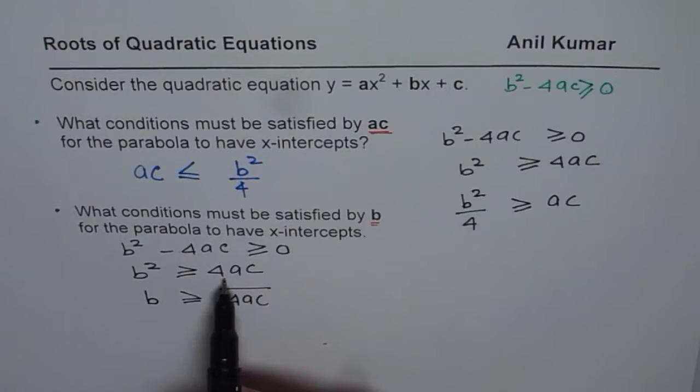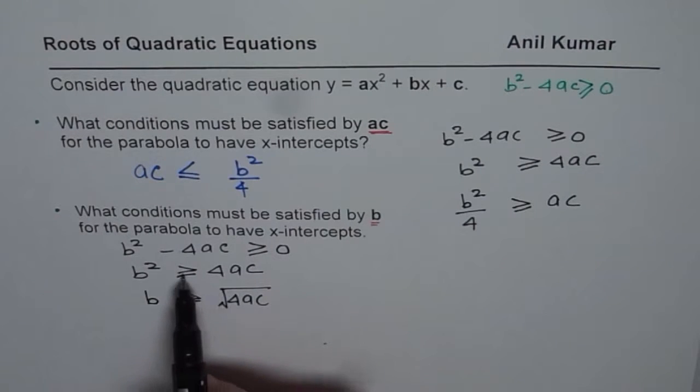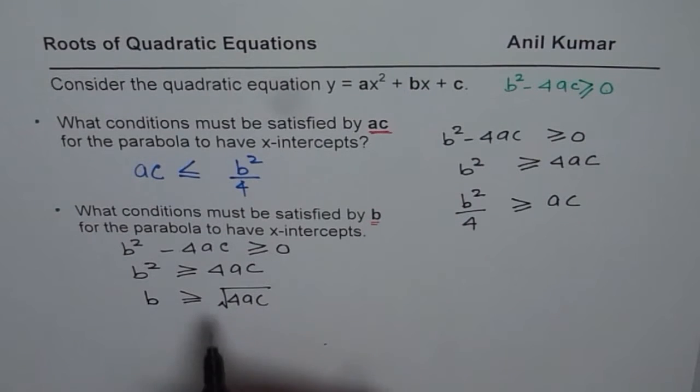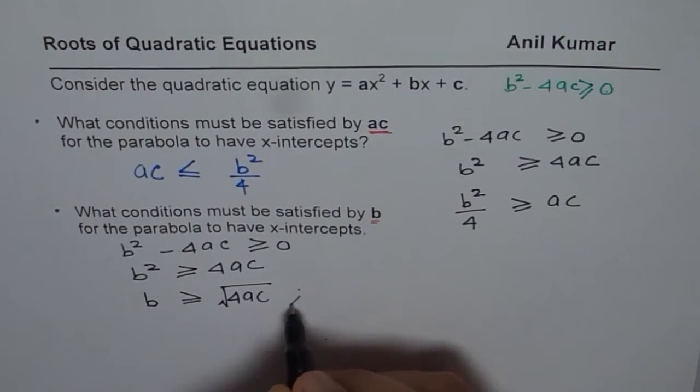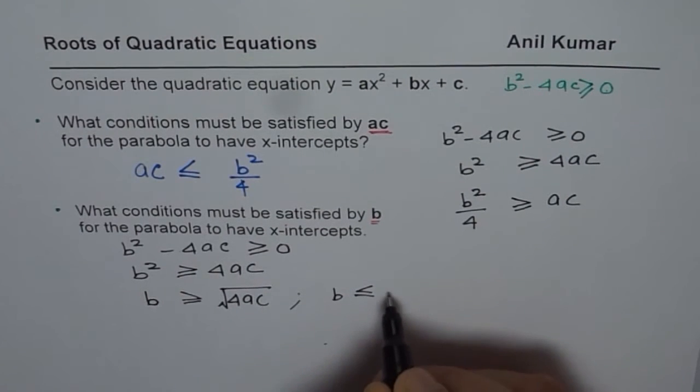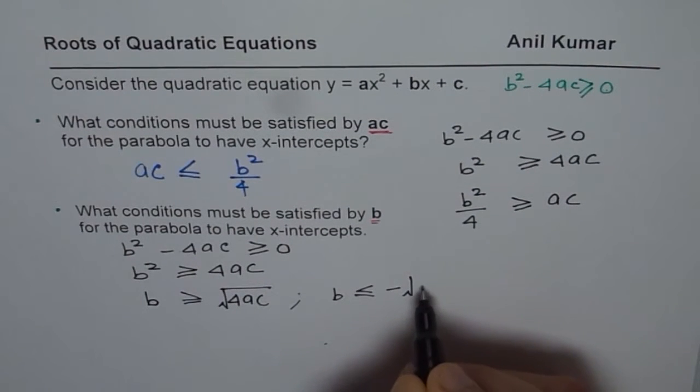Now the idea here is, if you have positive things going on, then the sign is greater than or equal to. But as soon as you change the sign to negative, it becomes less than or equal to. So the condition is this, or b is less than or equal to negative of square root of 4ac.